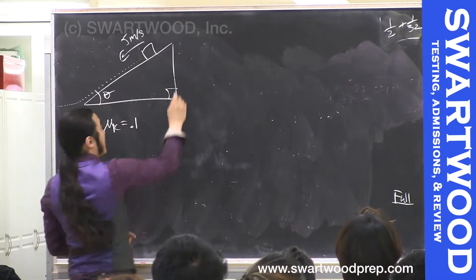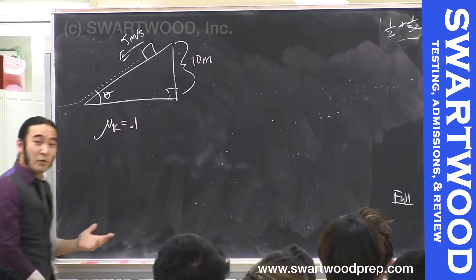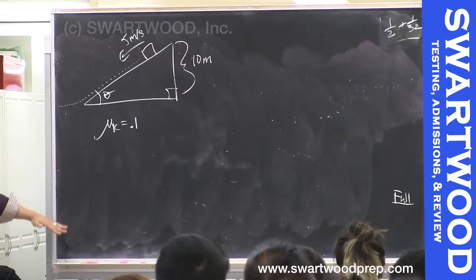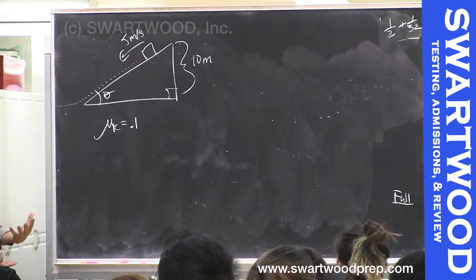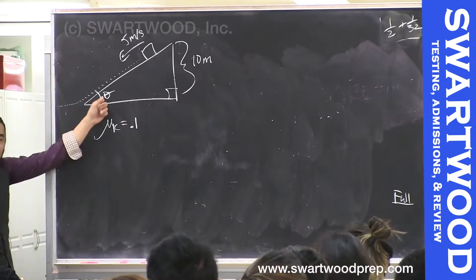The coefficient of kinetic friction is 0.1. You can use theta in your answer if you want, and the height here is say 10 meters. There's one problem though. When you look at the answer choices, you would expect to see theta in there, you don't see it. They're just numbers.